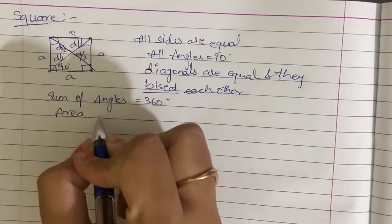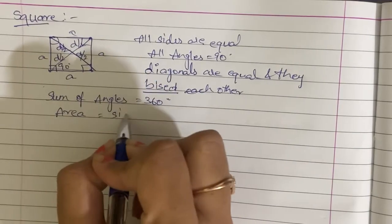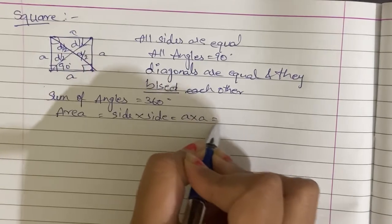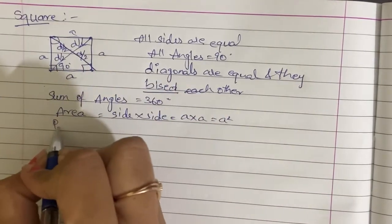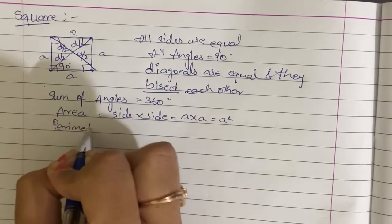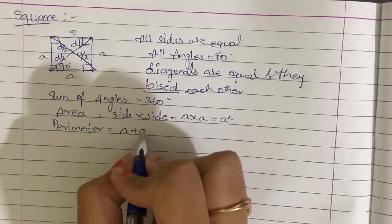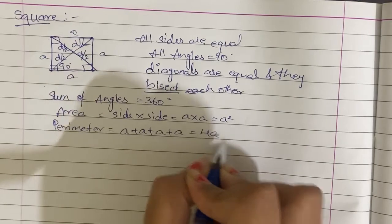Area of the square is side into side, that is a into a, that is equal to a square. Perimeter of the square is the sum of the 4 sides, a plus a plus a plus a, that is equal to 4a.